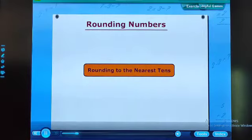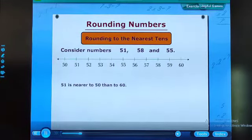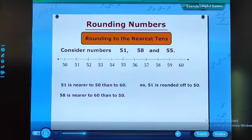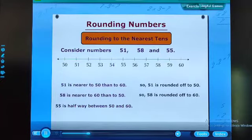Rounding to the nearest tens. Consider numbers 51, 58 and 55. 51 is nearer to 50 than to 60, so 51 is rounded off to 50. 58 is nearer to 60 than to 50, so 58 is rounded off to 60. 55 is halfway between 50 and 60, so 55 is rounded off to 60.